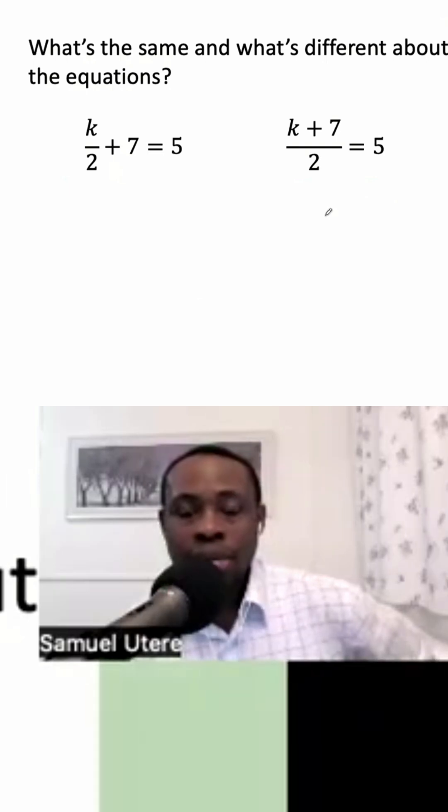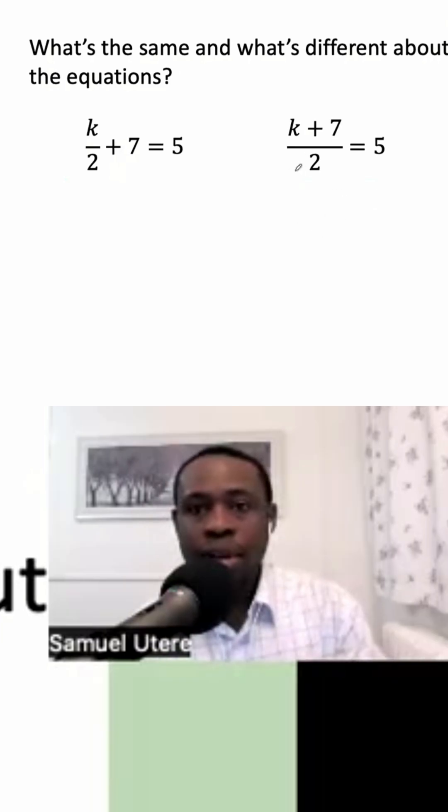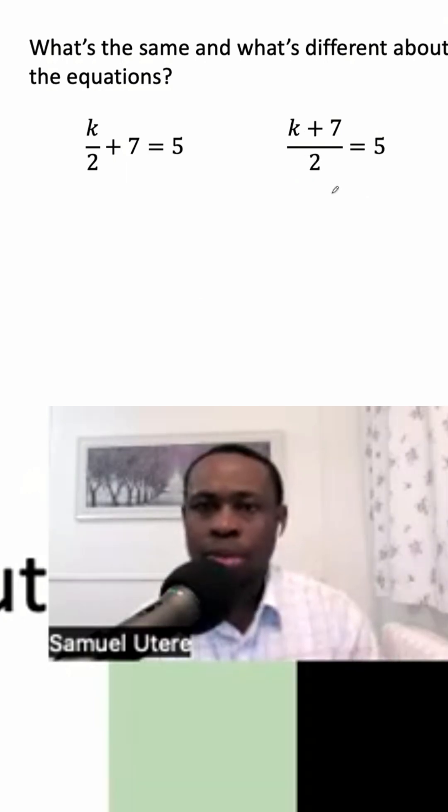We're adding seven, so we're going to subtract seven from both sides. But have you noticed that this is different? We have this whole lot, K add seven, being divided by two. So I'm sure you're thinking what we would need to do to eliminate or get rid of dividing by two.